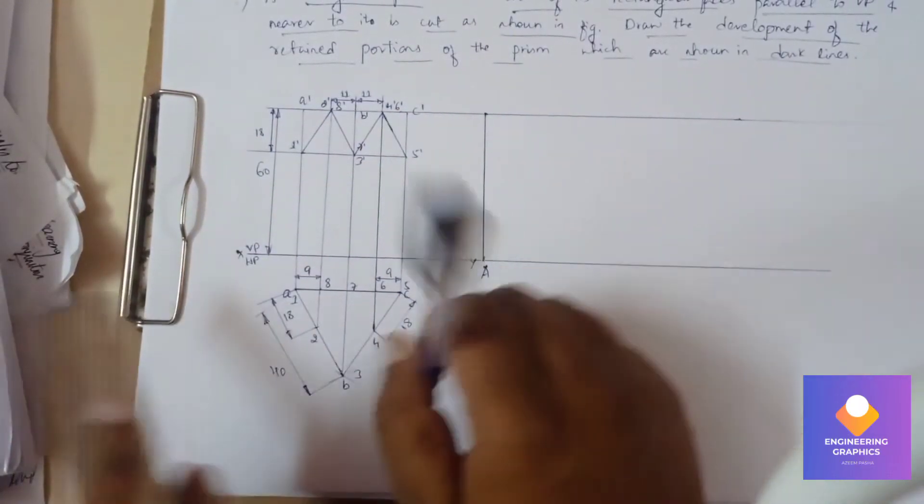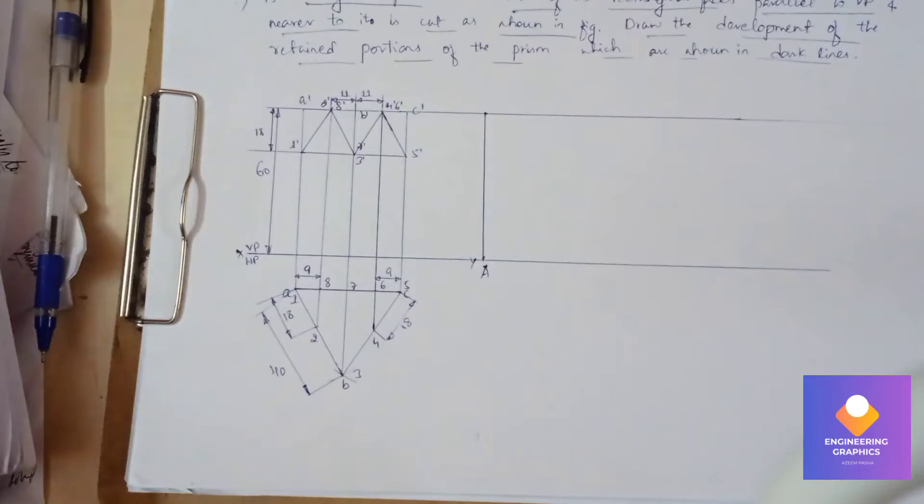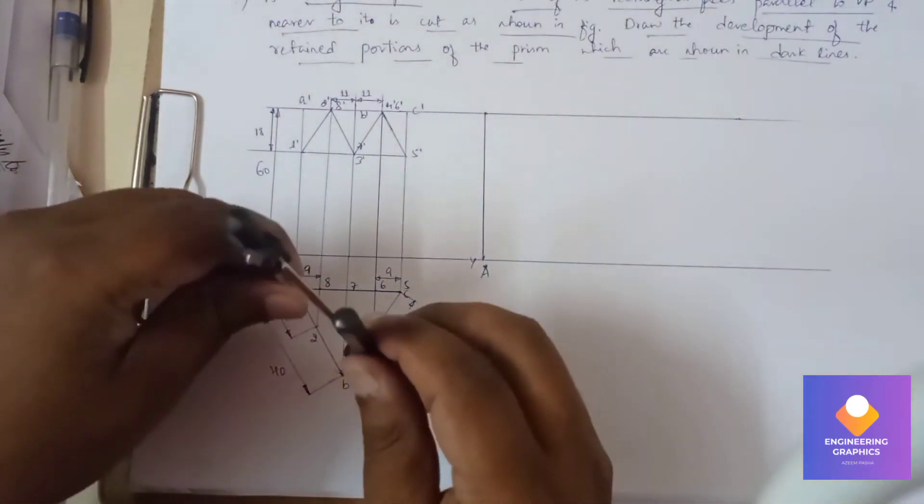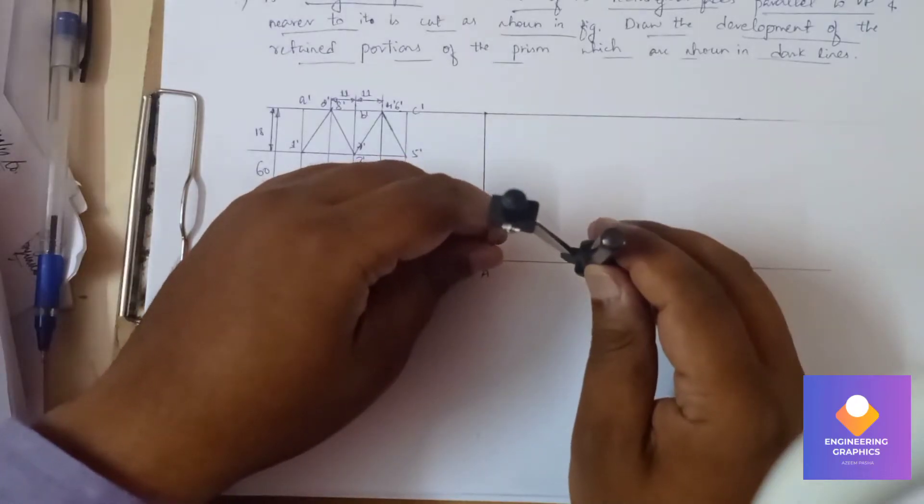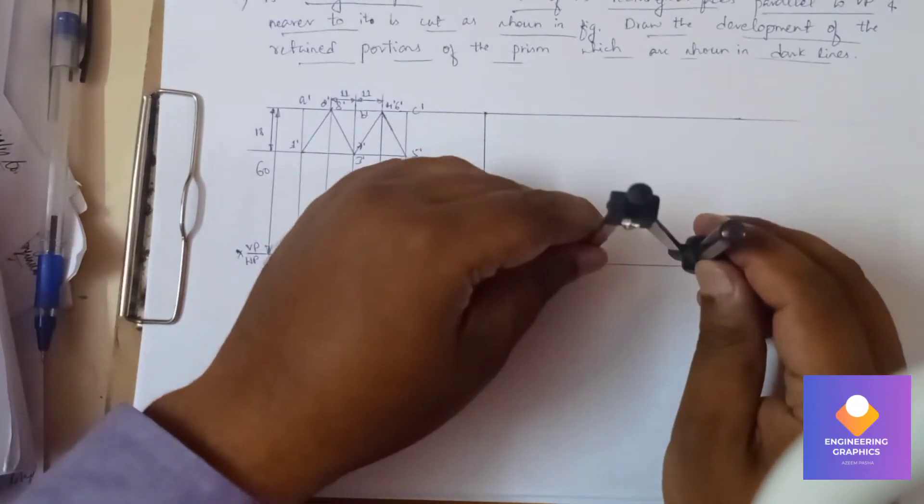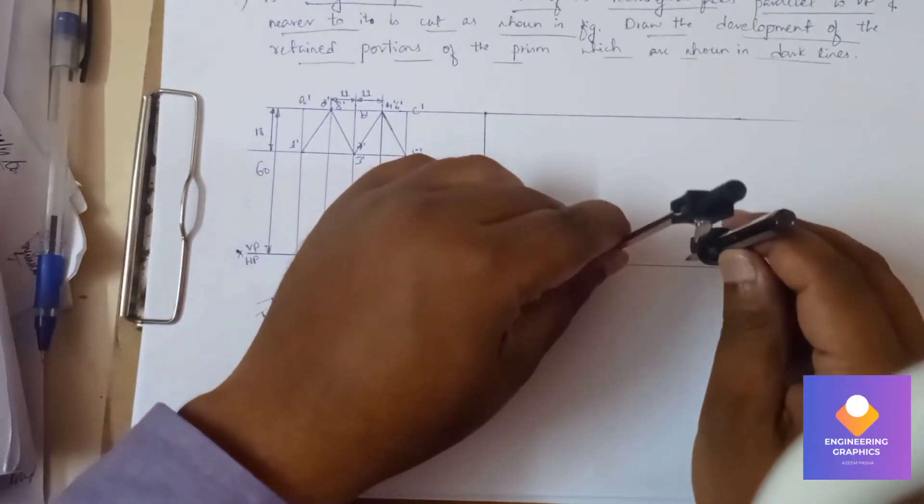That point is A. Here it is a triangular prism, having a dimension of 40. It is having 3 sides, 40 into 3 means 120. So 3 arcs I need to cut.